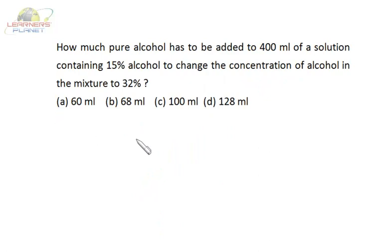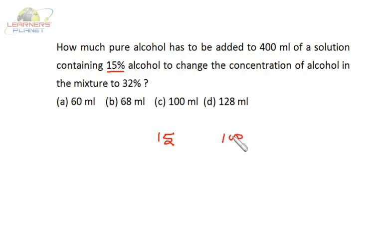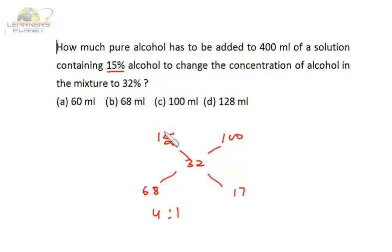How much pure alcohol has to be added to 400 ml of a solution containing 15% alcohol to change the concentration to 32%? Currently it is 15%. We add 100% pure alcohol and wish to get 32%. Writing the differences using the allegation method gives a ratio of 4 is to 1. That means 4 parts of existing solution to 1 part of pure alcohol. So if it is 400 ml, we need to add 100 ml of pure alcohol.